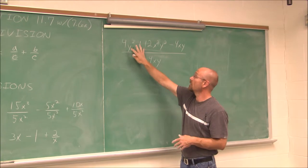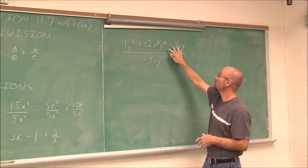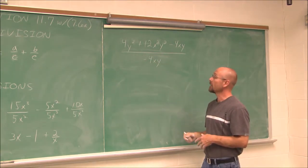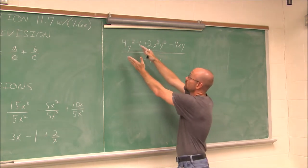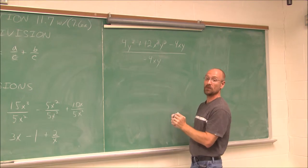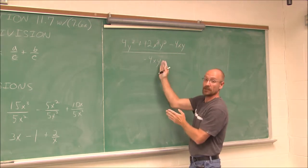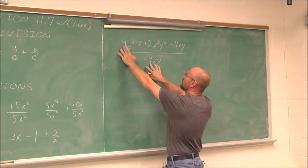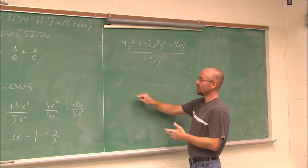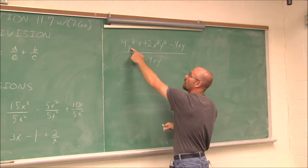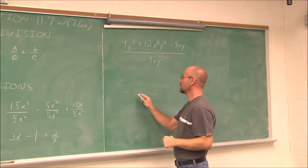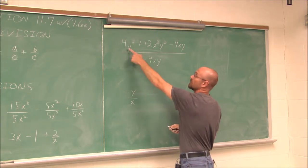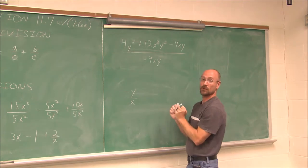Let's look at one more example. Here we have 4y squared plus 12x squared y squared minus 4xy, and we want to divide all of that by negative 4xy. As a shortcut, I'm going to simplify these terms individually. The first term: 4 over negative 4 is negative 1, y squared over y reduces to just y, but there's still an x in the denominator that didn't cancel. So the first term is negative y over x.